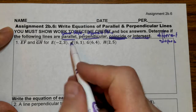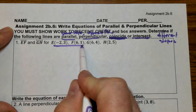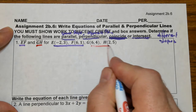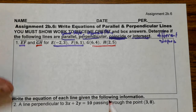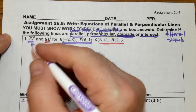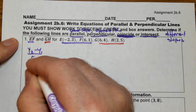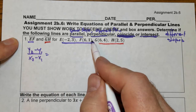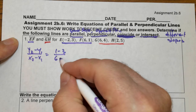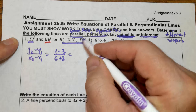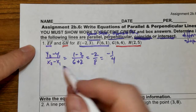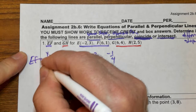I have two sets of points. EF is my first segment and GH is my second segment. I need to find my slope. The equation for slope is y2 minus y1 over x2 minus x1. Plugging in those points: 1 subtract 3 over 6 subtracting negative 2, which is adding 2. So this is negative 2 over 8, which equals negative 1 fourth. That is the slope for segment EF.